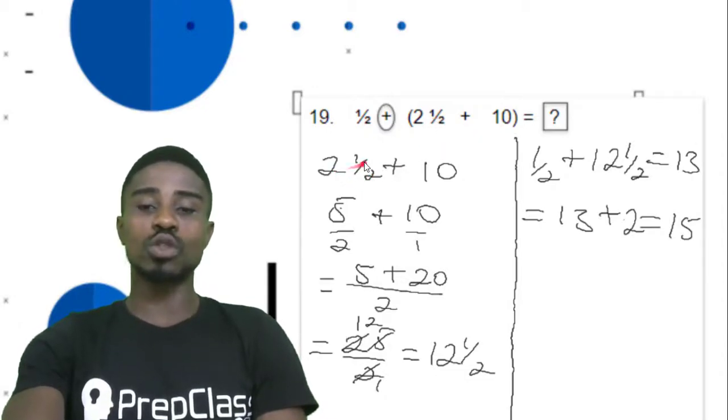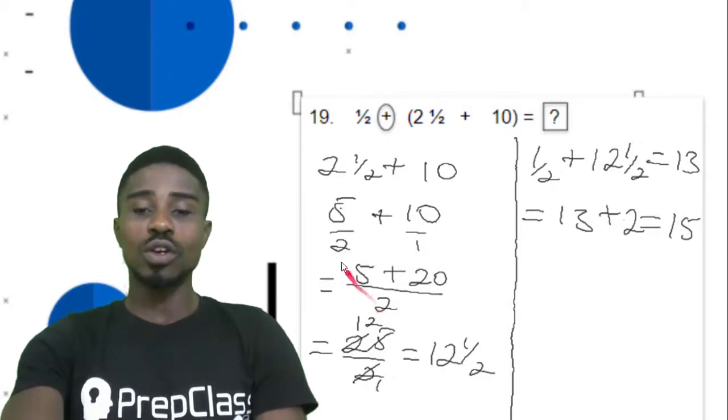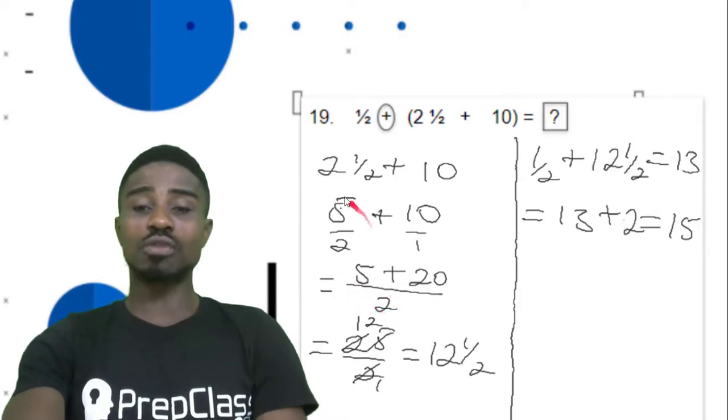So 2 and a half is 2 times 2 plus 1, that's 5 over 2 plus 10. We find the LCM of 2 and 1, that's 2. 2 here, 1. 2 here, 1. 1 times 5 is 5. Plus, 2 divided by 1 is 2. 2 times 10 is 20. So we add the numerators. 5 plus 20 will give us 25 over 2. And 25 over 2, 2 here, 1. 2 into 25 will give us 12 remain that 1. So it will be 12 whole number 1 over 2. That's what we got by adding this.